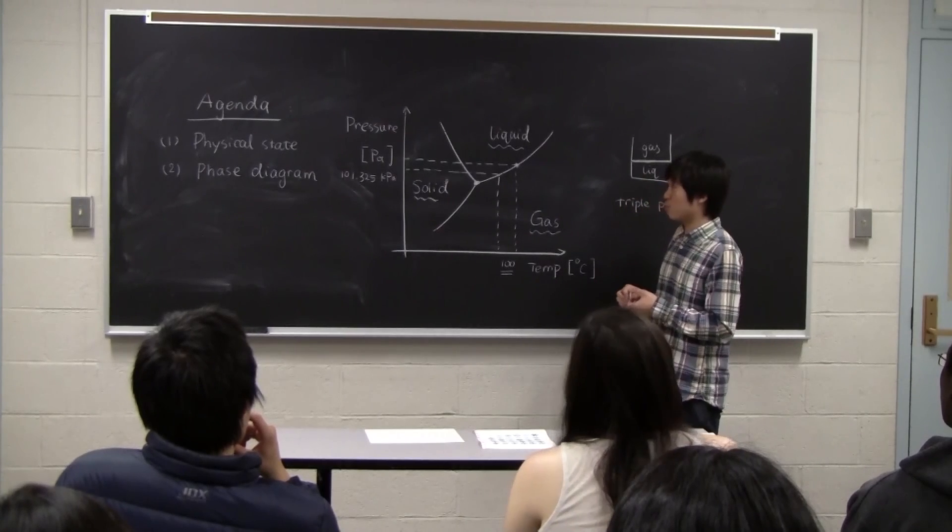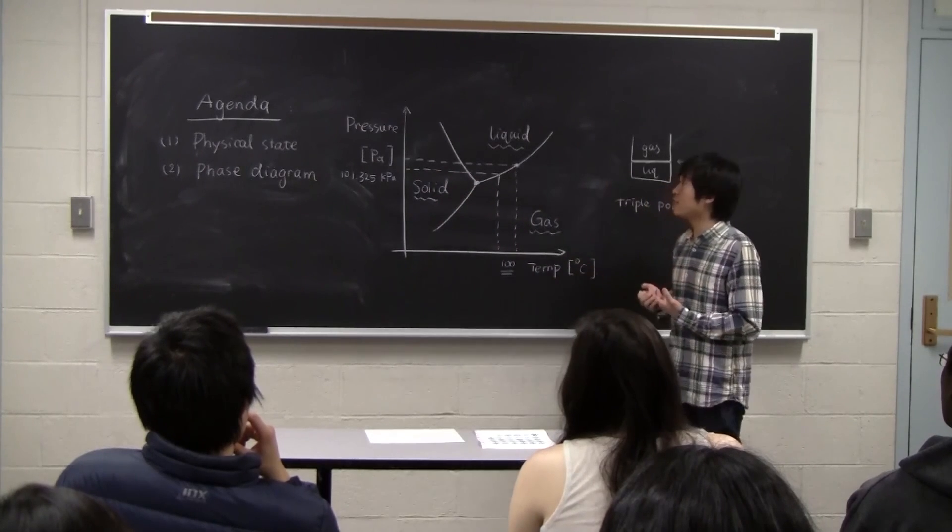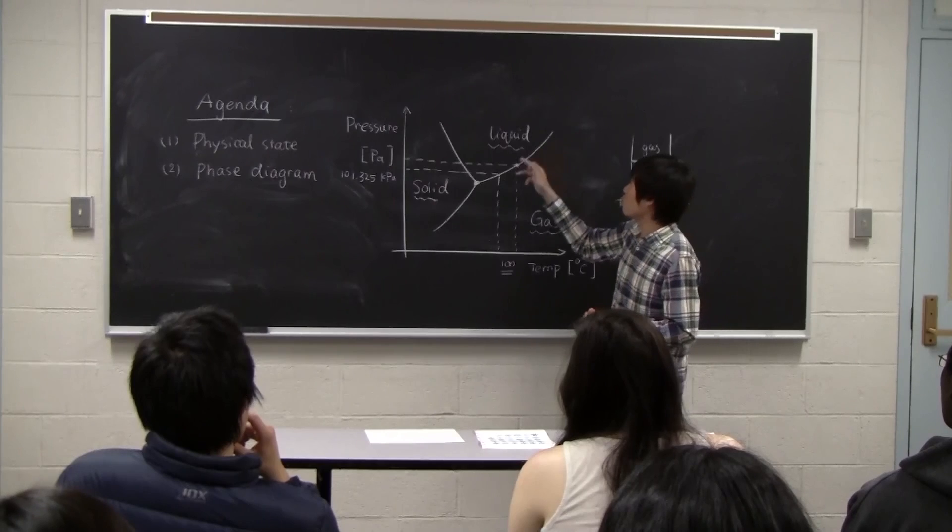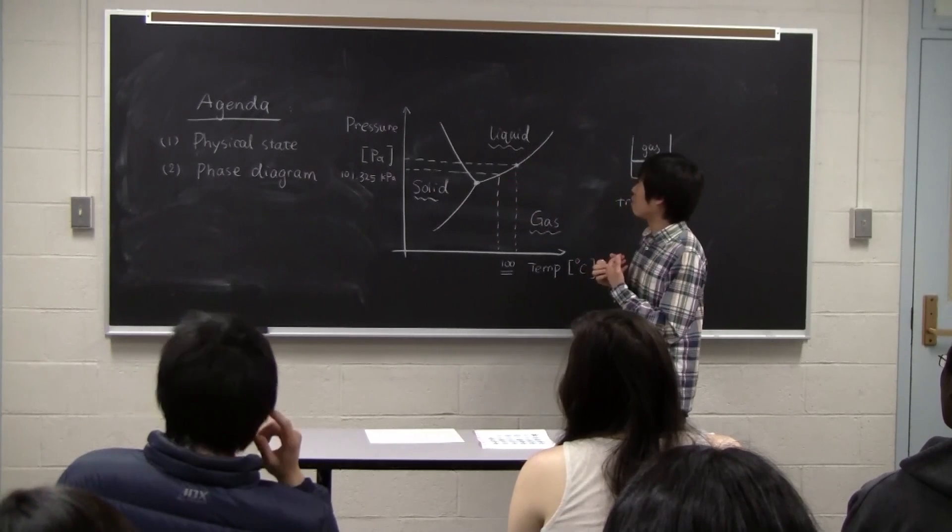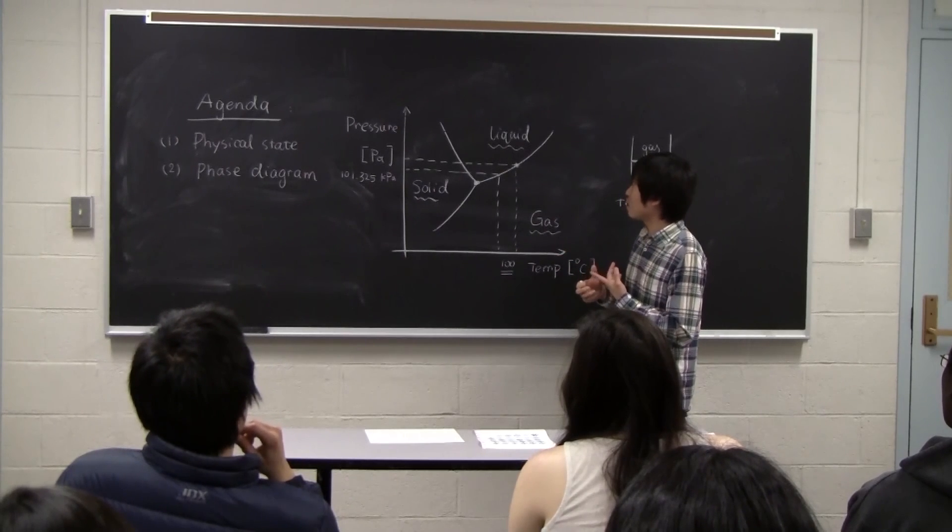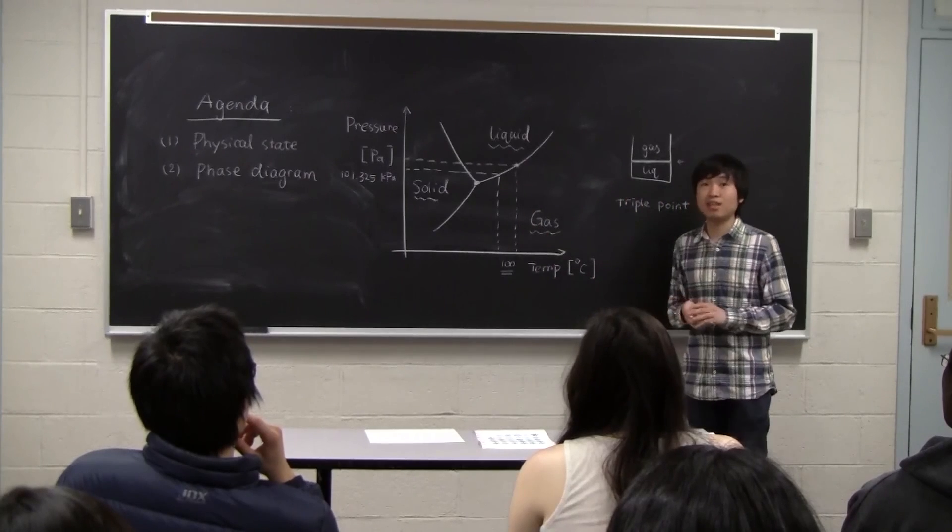And there are three different elements that we should remember. First, in each space, you have the phase of water. And then we have the coexisting lines, which are the lines where water can exist as two different phases simultaneously. And then we have the triple point, where three different phases can coexist.